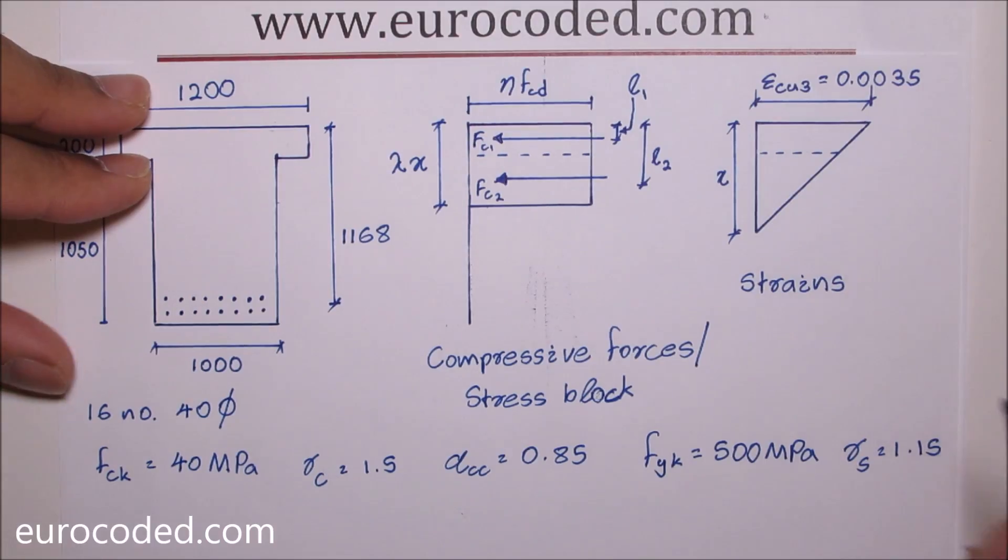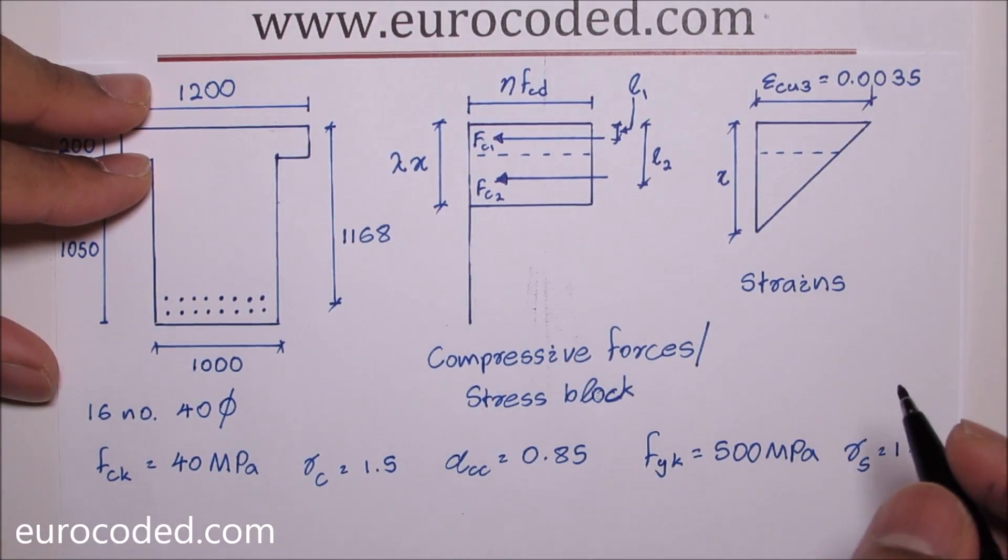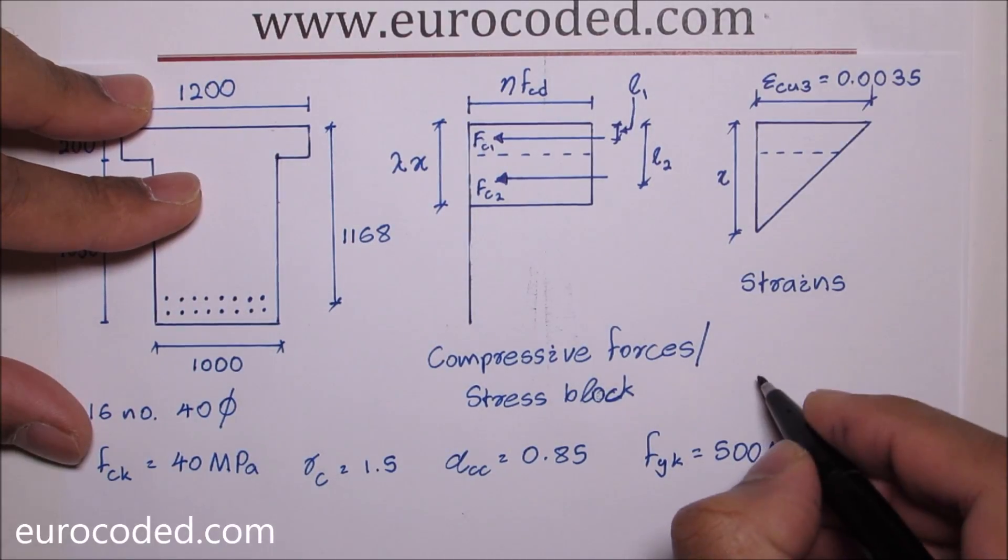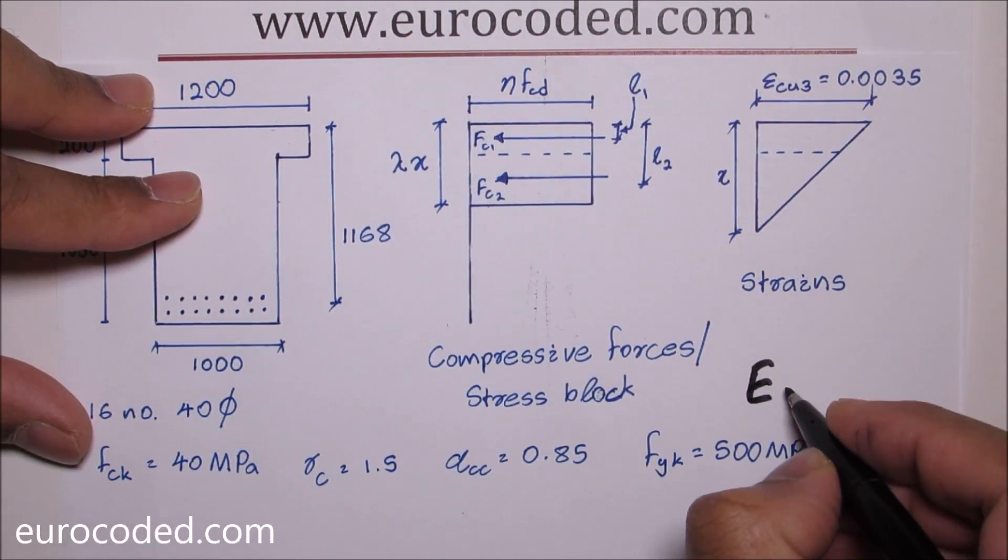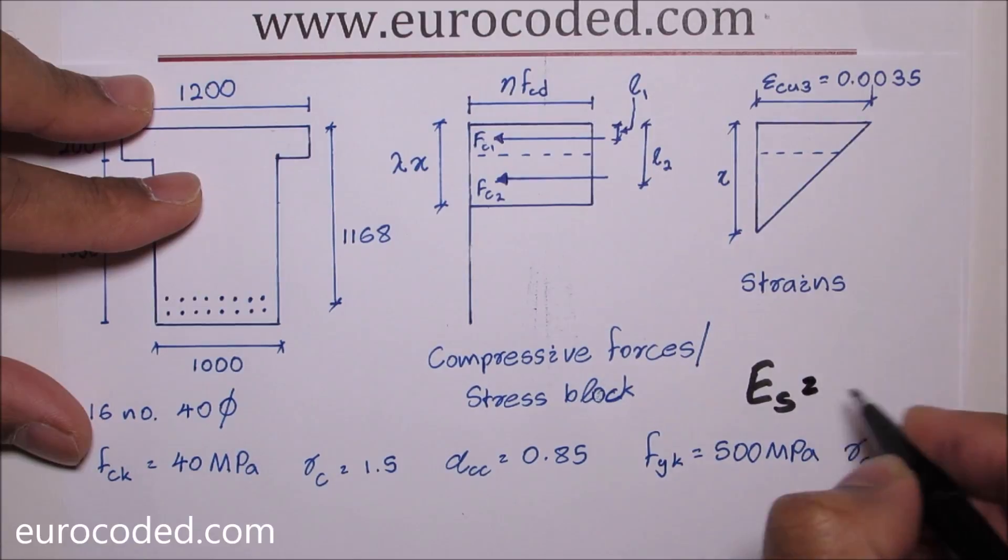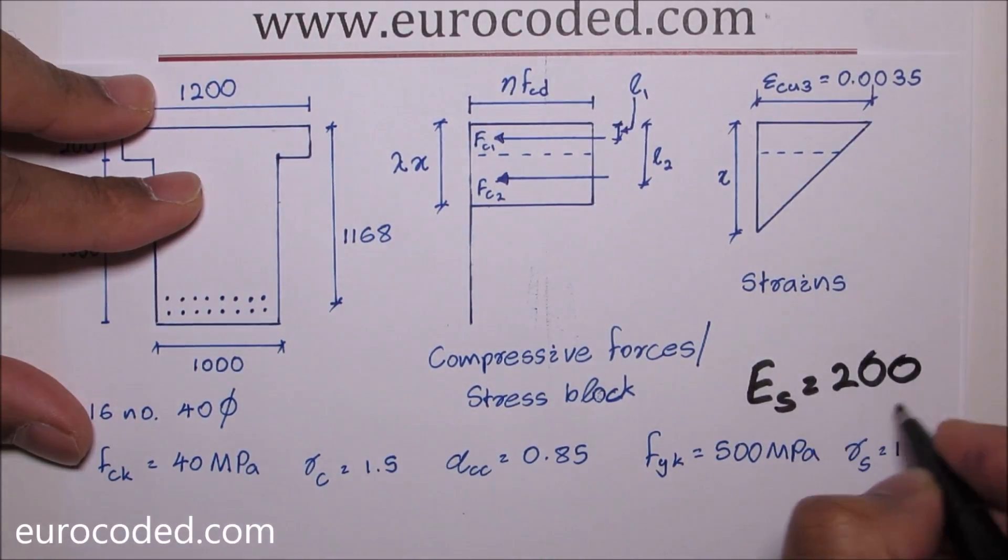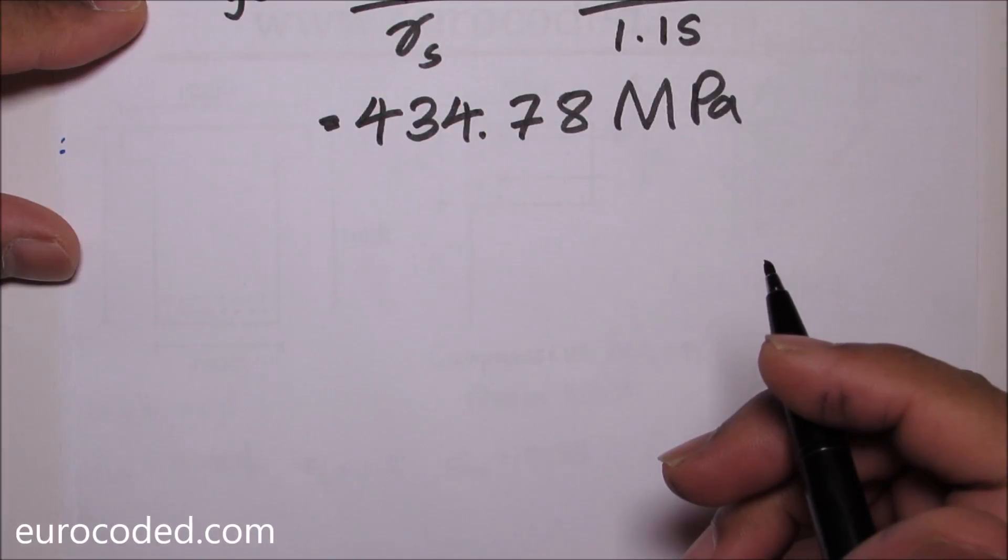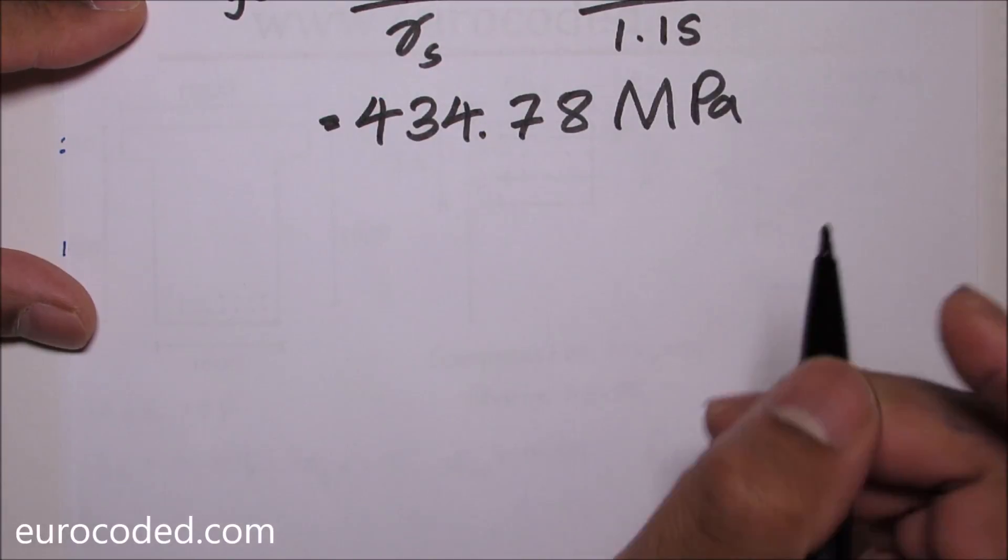One thing I forgot to mention is reinforcing steel modulus of elasticity is going to be ES is 200 gigapascal. Then we can calculate the yield strain of reinforcement.